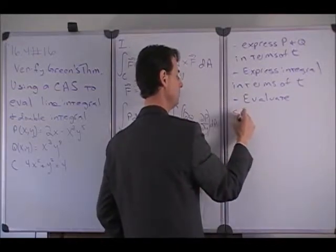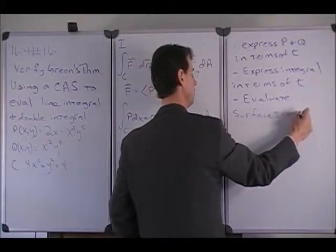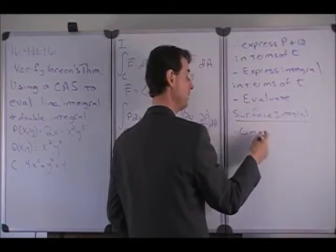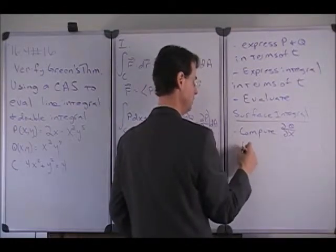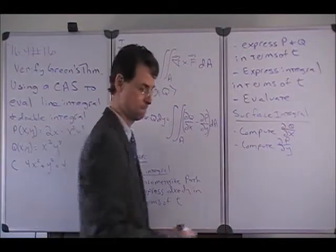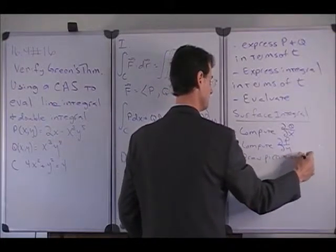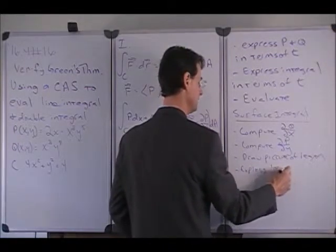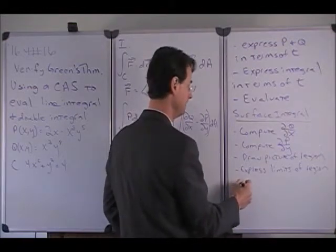And then the second part of our plan is the surface integral, or the integral over the area. And the plan here is to compute, we don't parametrize anything here, we compute partial Q partial x, you compute partial P partial y. We draw the picture of the region if we haven't yet. We express the limits for our double integral, and then we evaluate.